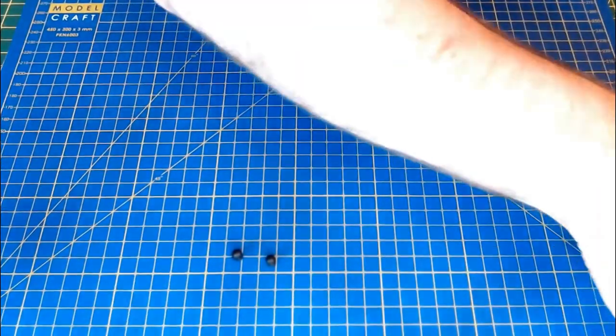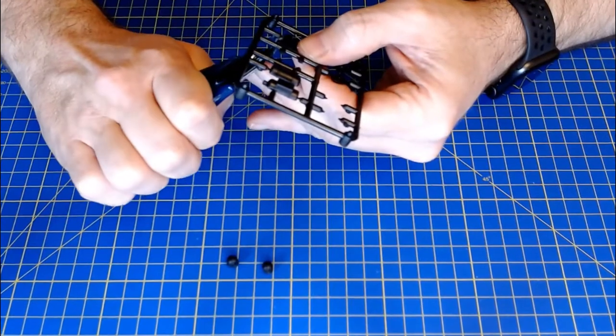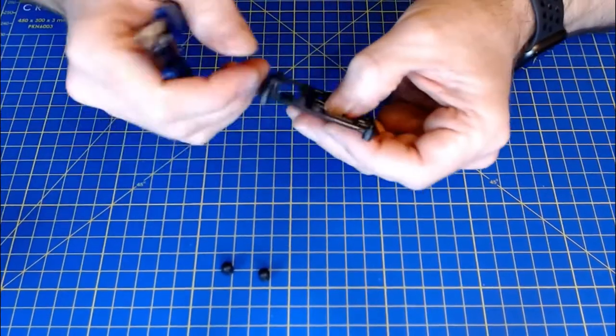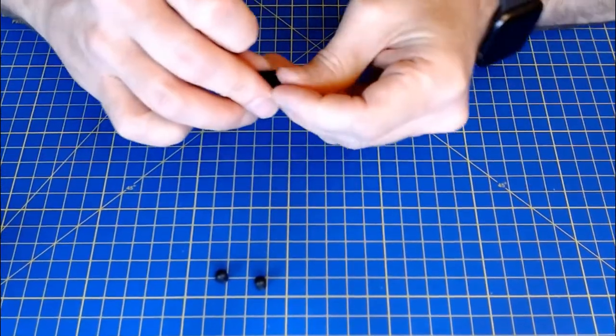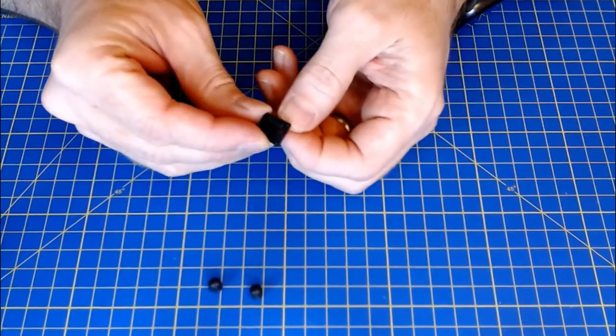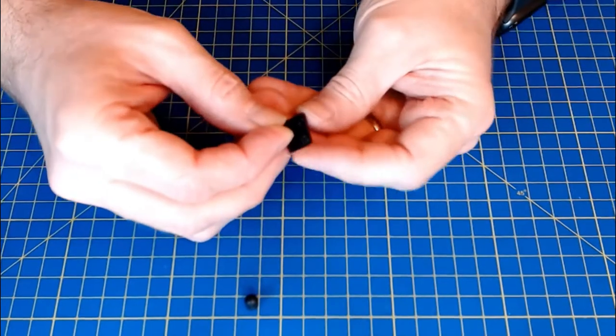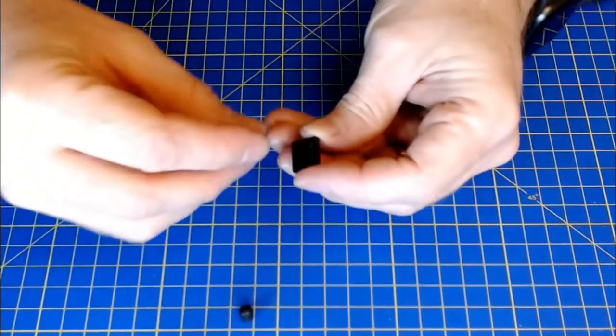And then fitted to part C, which is this part here. Fitting both of them to part C. Just make sure I'm getting the right way around, right orientation. That way. And these are going to both be sat, I think, in a downward position.